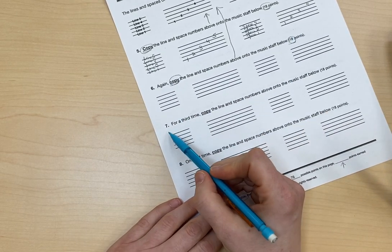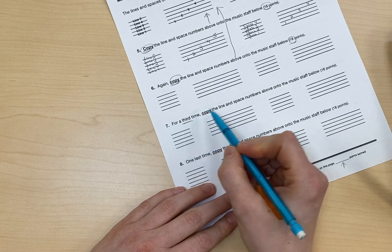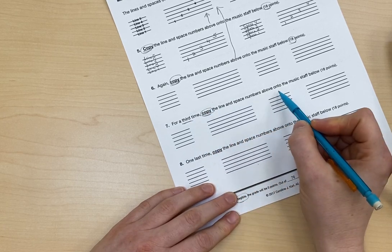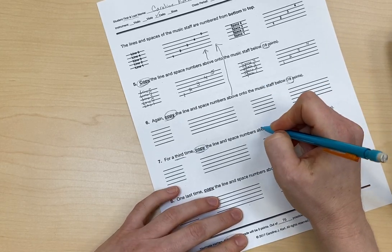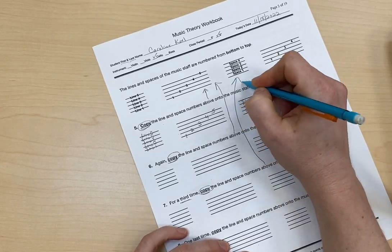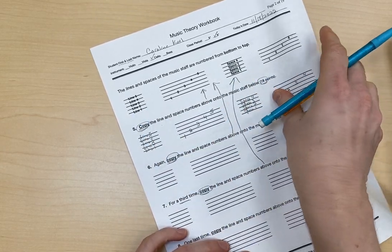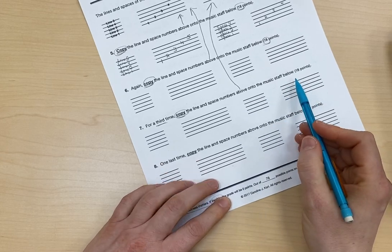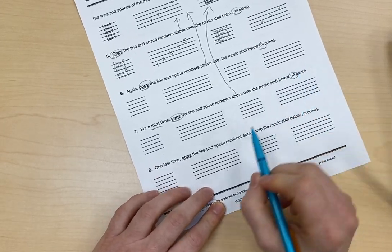And then number seven is, for a third time, copy the line and space numbers above. And again, these line and space numbers are this up here. Okay? On to the music staff below. So this is also worth 18 points.